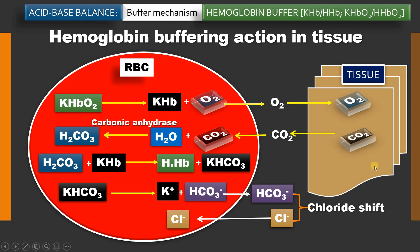Whatever carbon dioxide is generated as a result of metabolism in the tissue is converted to bicarbonate, dissolved in the plasma, and carried through the blood to the lungs. There is unloading of oxygen and transport of carbon dioxide in the form of bicarbonate in the plasma — not inside the RBC. This action is carried out by both the hemoglobin buffer and the bicarbonate buffer system.